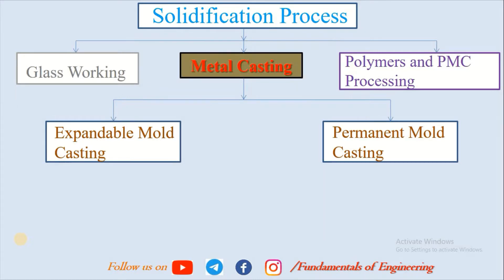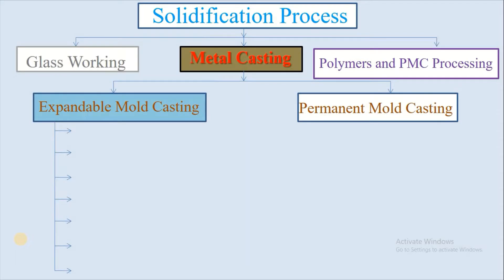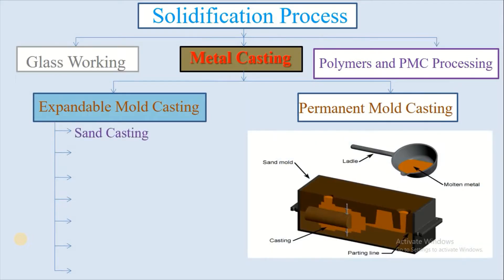First, we will see the expandable mold casting process. In that, the first type is sand casting, also known as sand molded casting. It is characterized by using sand as a mold material. The term sand casting can also refer to the object produced via the sand casting process. Sand castings are produced in specialized factories called foundries. Over 60 percent of all metal castings are produced via the sand casting process.